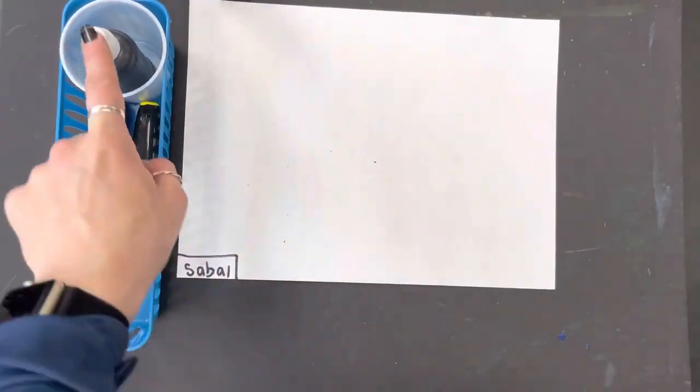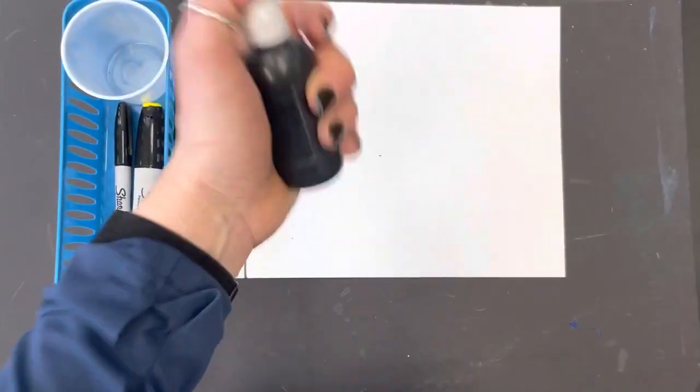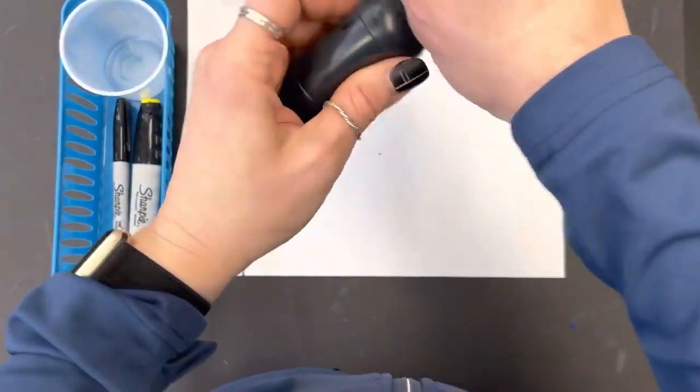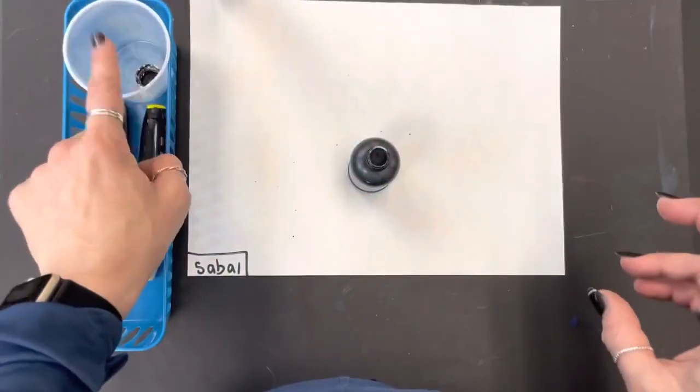All right, before you start using your bingo dabber, make sure your name is on the bottom left corner in Sharpie, hold the lid and shake it, put the cap back in your art kit so it doesn't get lost.